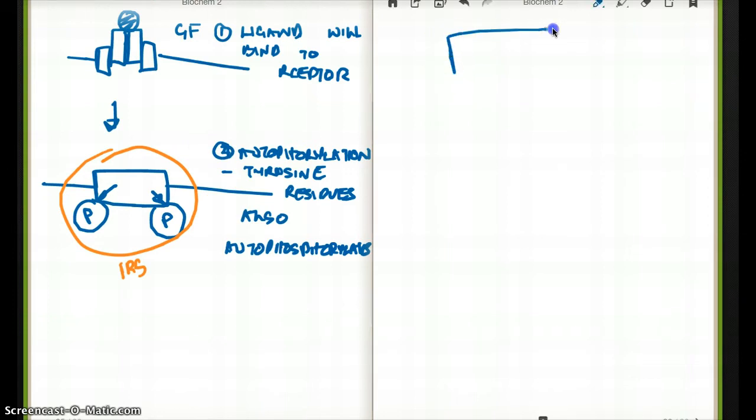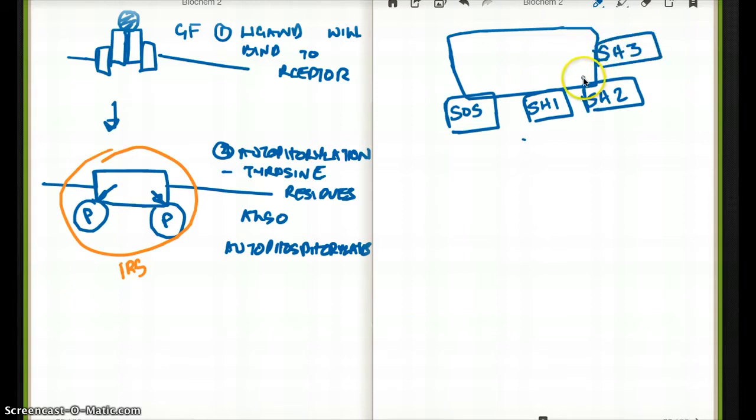Now what's going to happen is different binding complexes are going to come and bind to this IRS. Imagine now that this is our IRS with the phosphorylation there. Different binding complexes are going to come and bind here. It could be SOS, that's one binding complex. It could be SH1, it could be SH2, it could be SH3. Different things kind of go in different directions. But the point is, these are all binding complexes, and they're going to come and bind to our IRS, which is nothing but insulin receptor substrate. So different binding complexes will bind our IRS. That's the third thing.